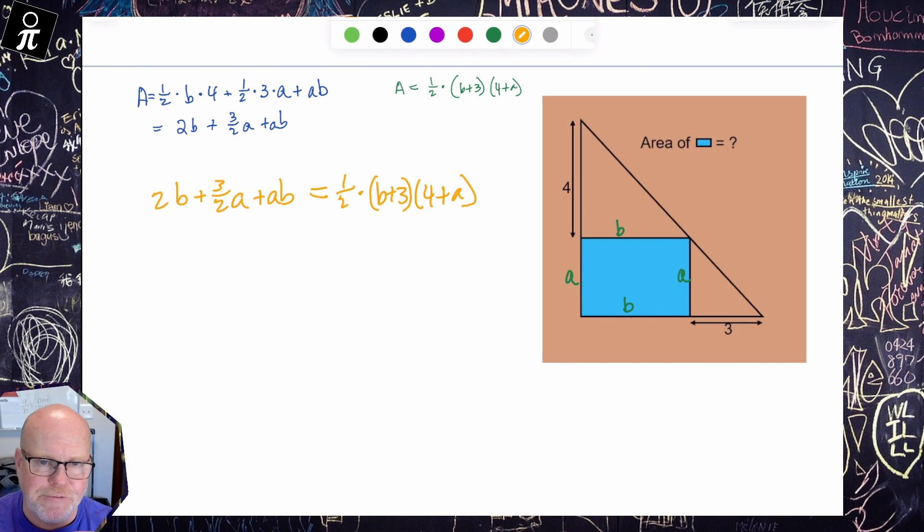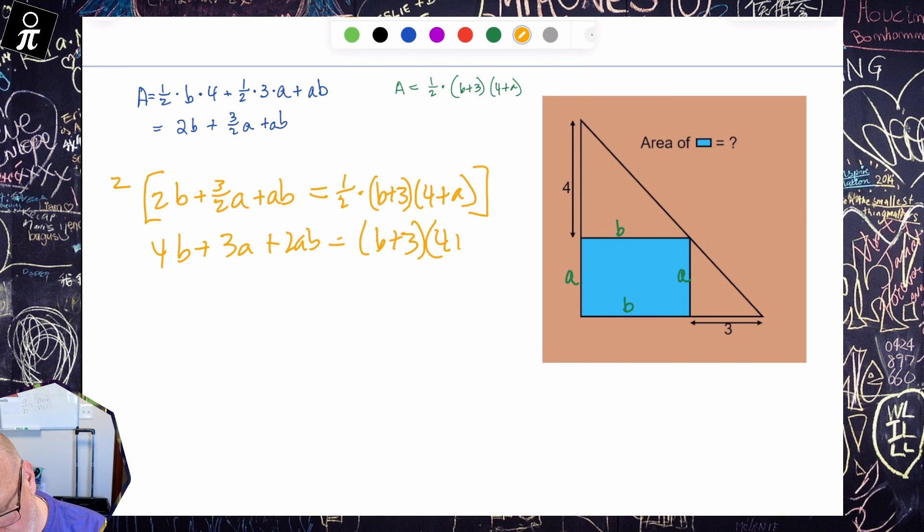And now let's do some math to see if we can find AB somehow. Like I see AB sitting here. And I know that an AB is going to happen here when we multiply these two binomials. So let's just see what's going to happen. So I'm just going to continue with the algebra. I'm going to first multiply both sides by two to get rid of that fraction. And so that becomes four B plus three A plus two AB is equal to B plus three times four plus A. All right. So multiplying everything by two kind of got rid of our denominators there.